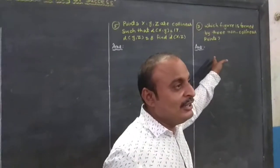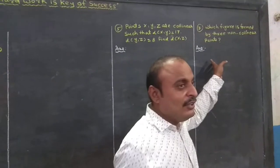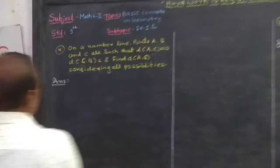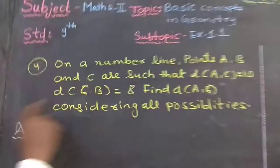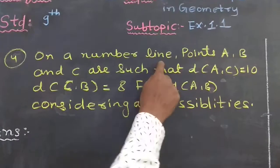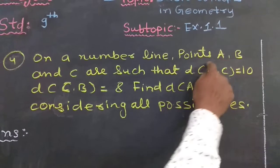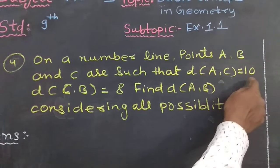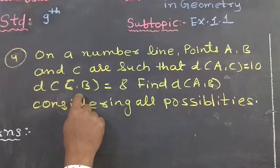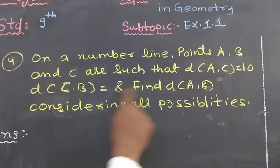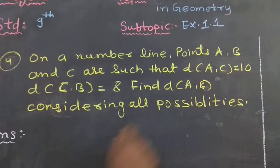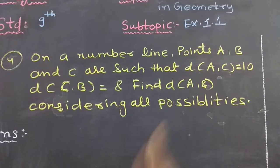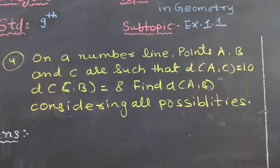Question number 6 is already done in the previous part. Now your first question here is question number 4. On a number line, points A, B, and C are such that distance AC is equal to 10, distance CB is equal to 8. Find distance AB, considering all possibilities. You have to consider all the possibilities.